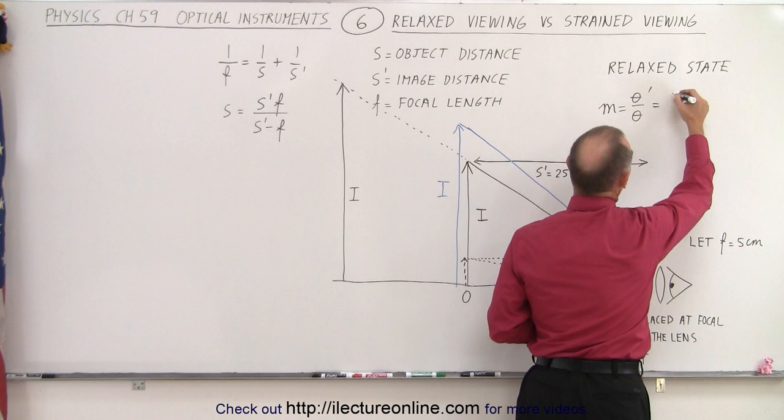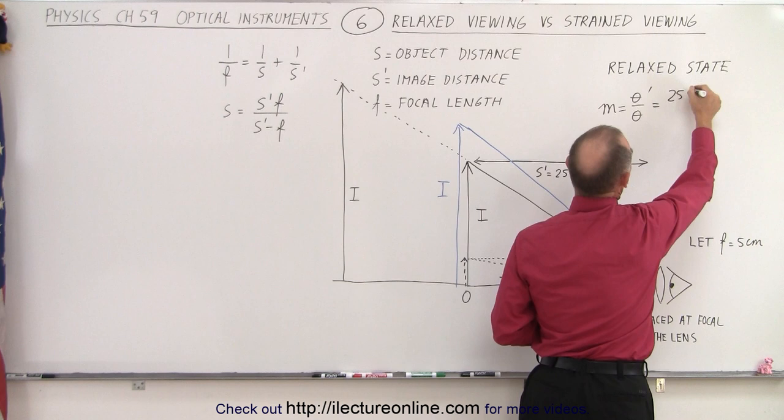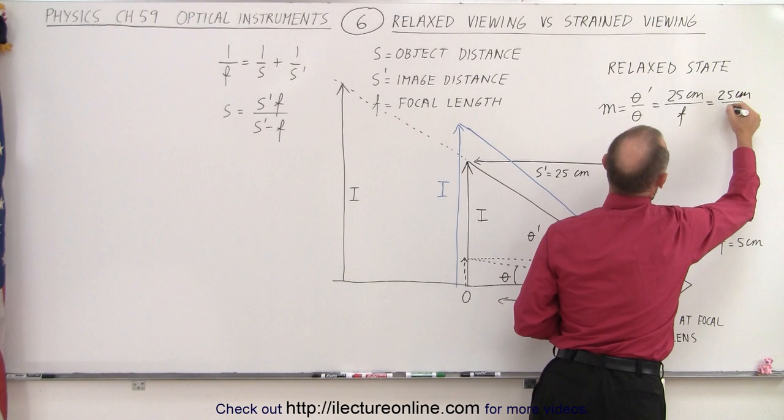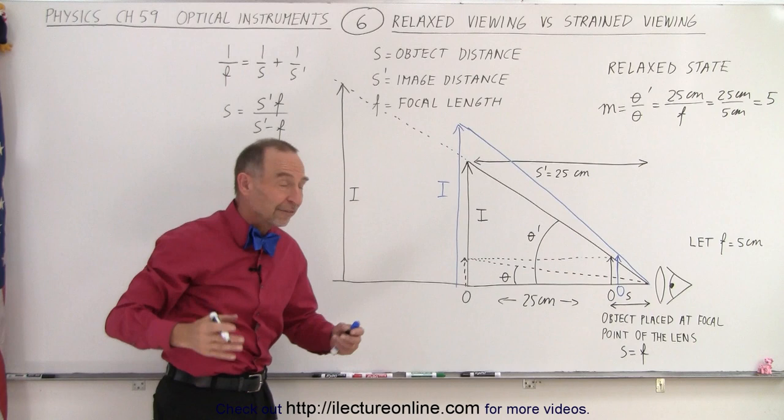we saw that it was essentially equal to 25 centimeters divided by the focal length, which in this case was 25 centimeters divided by 5 centimeters, which was equal to 5. So we saw that that allowed you a magnification of 5.